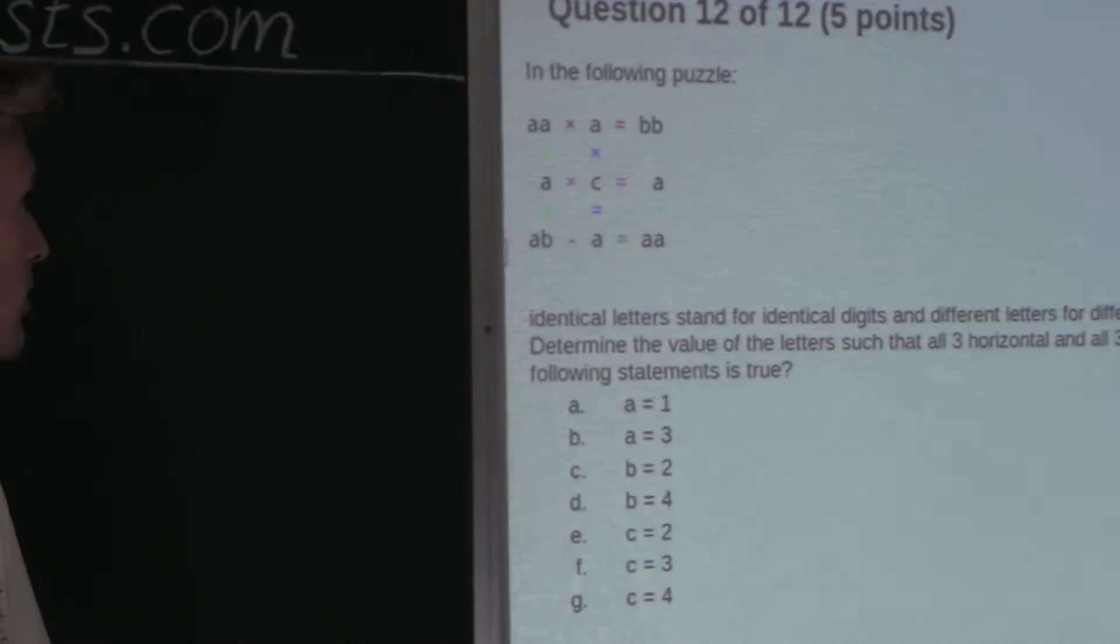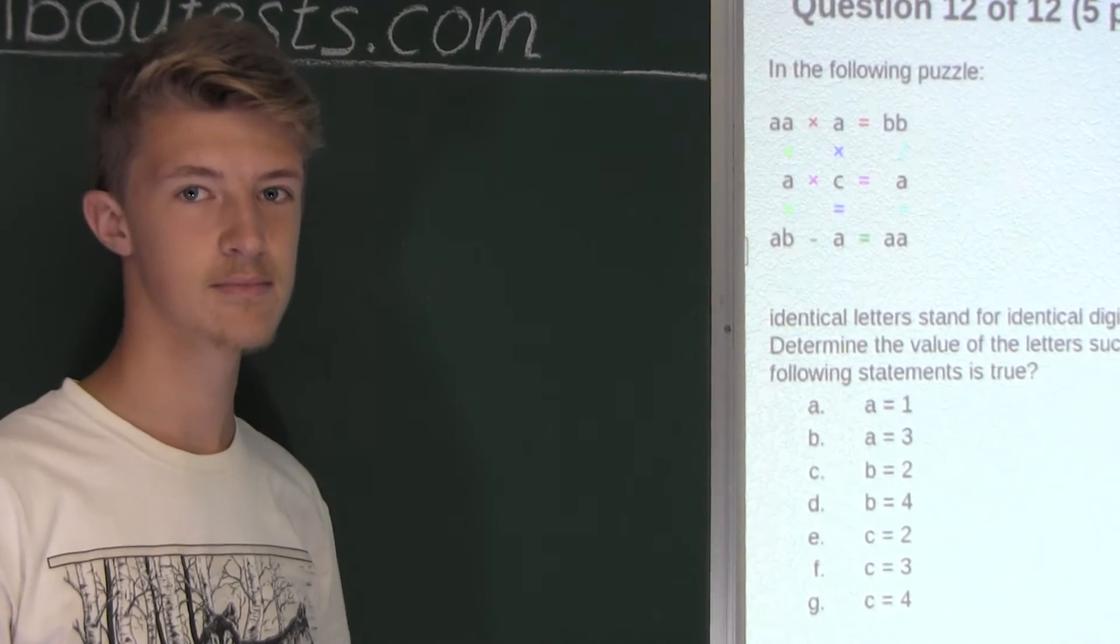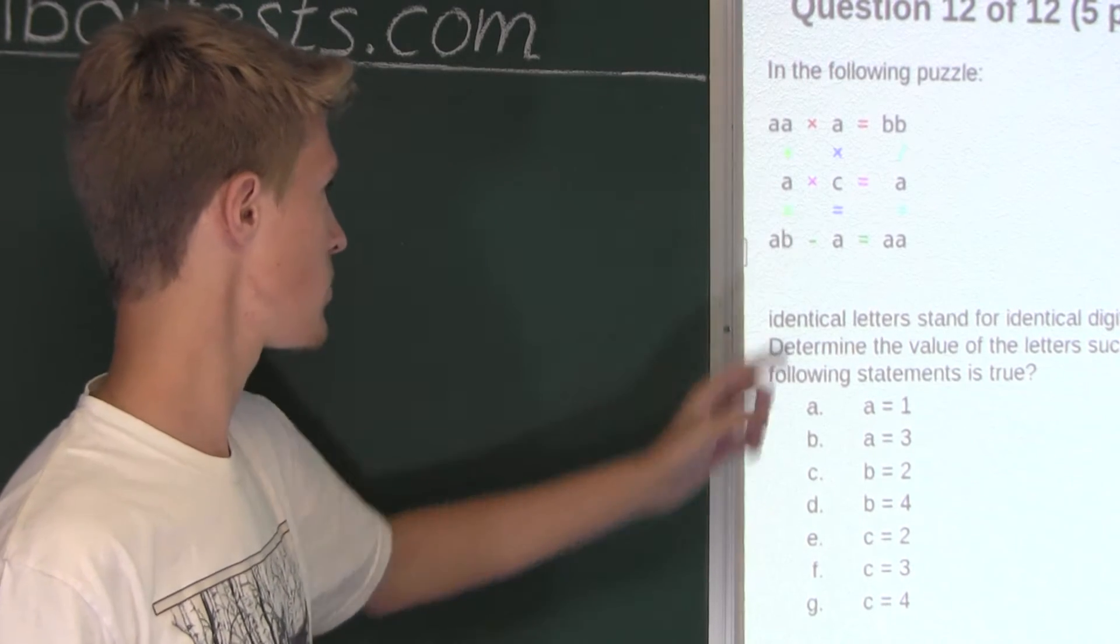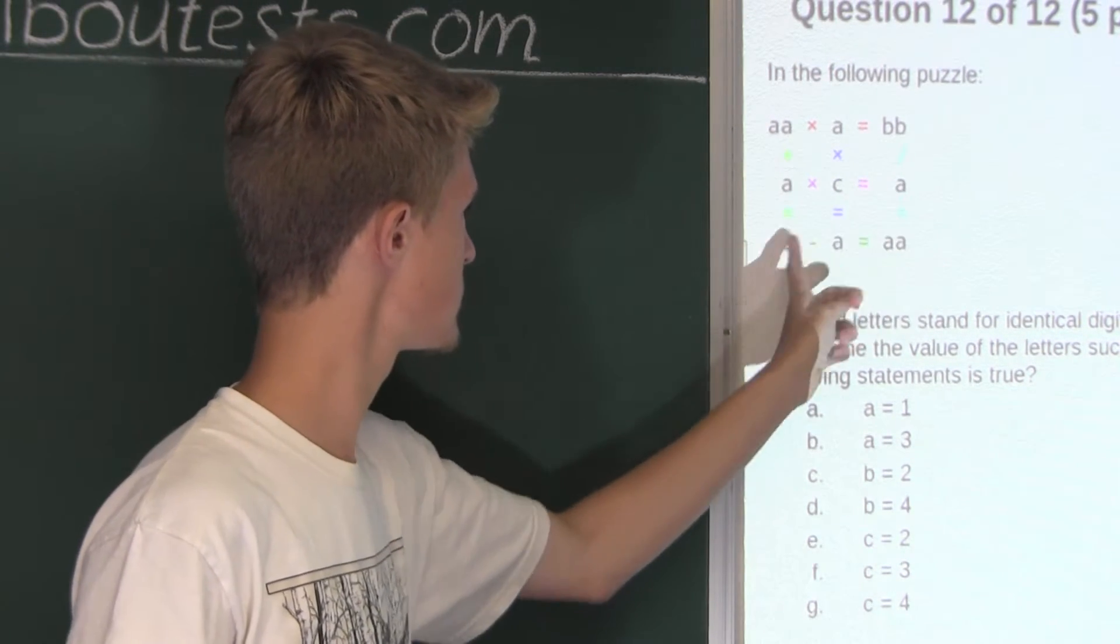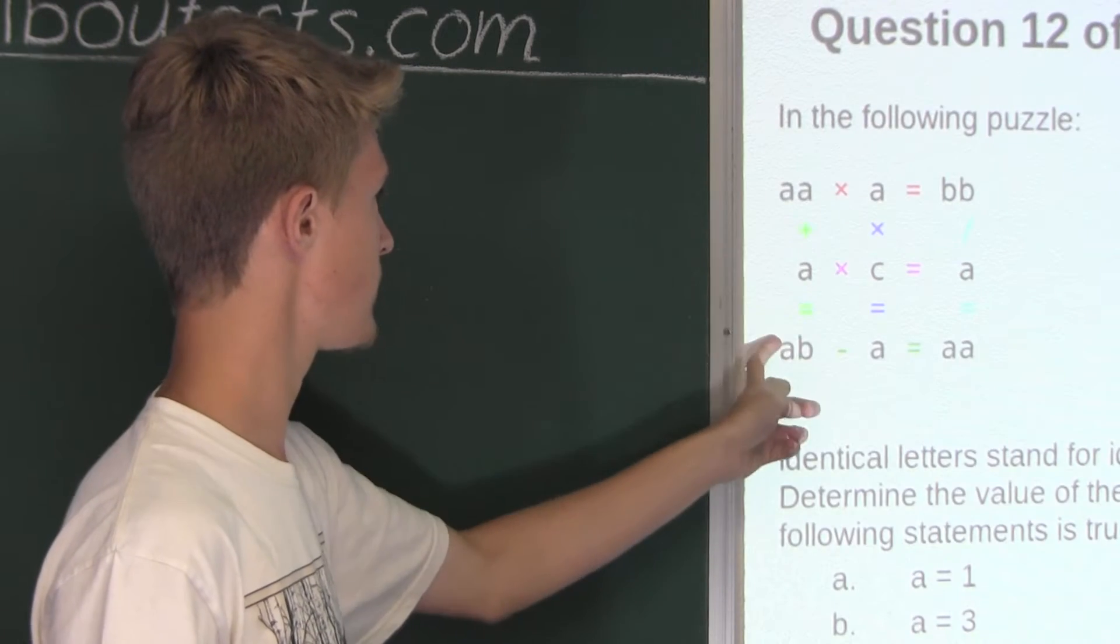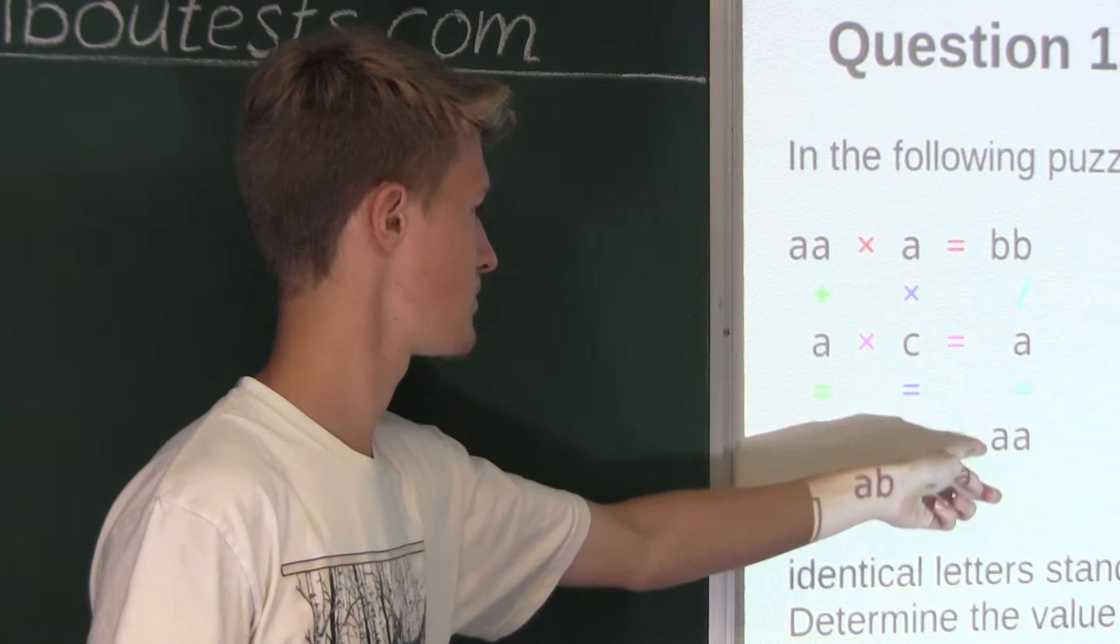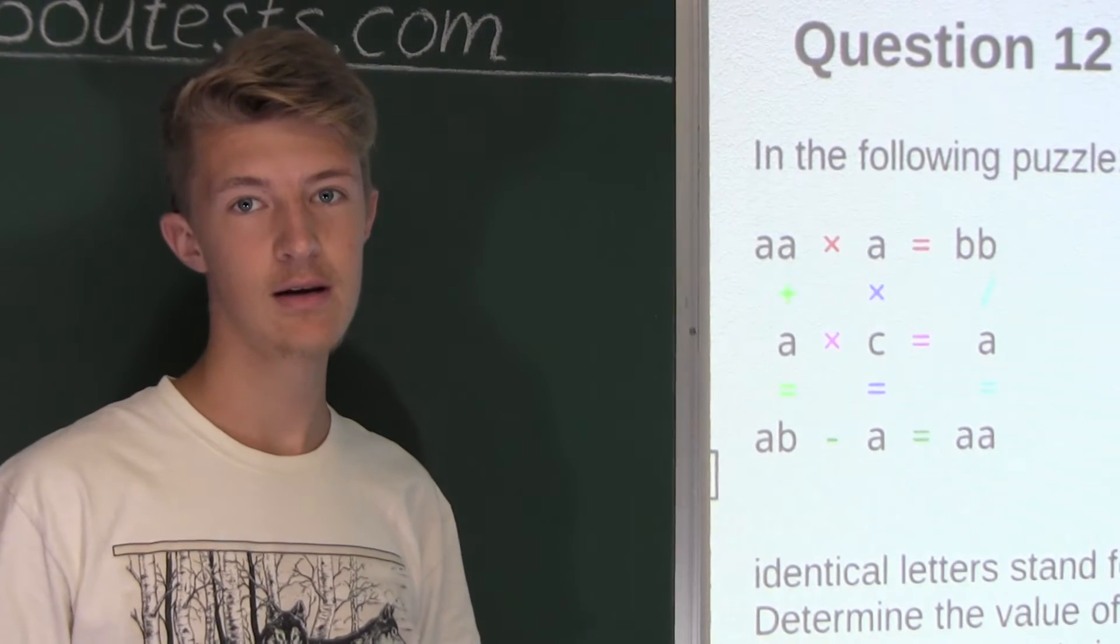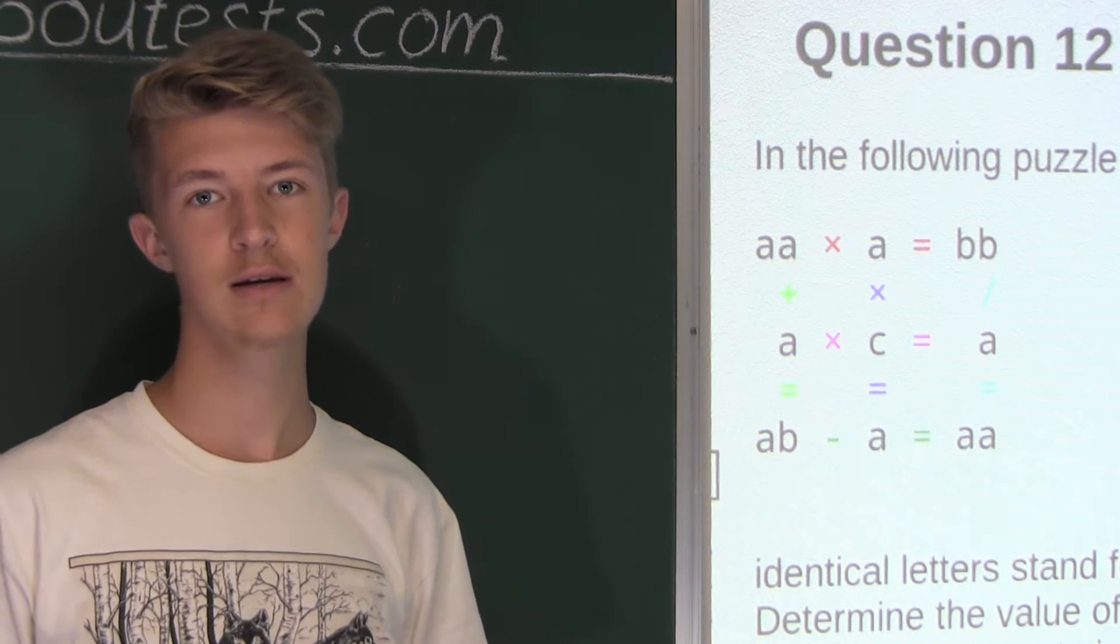Alright, so let's take a look at the puzzle. Okay, so in the puzzle, we are dealing with three horizontal equations and three vertical equations. Alright, and now we want to find an equation that will tell us something about A, B, or C.